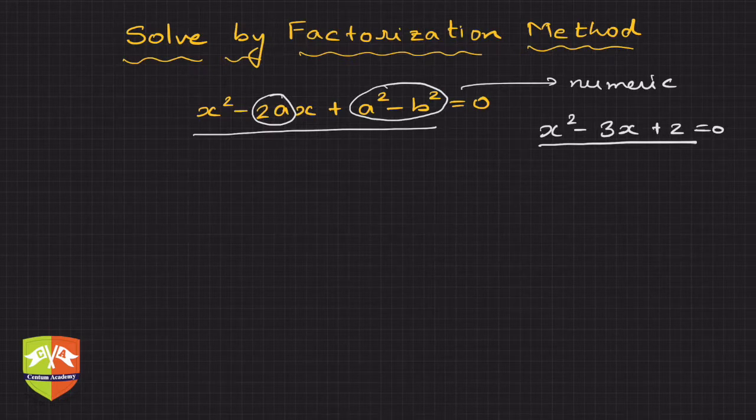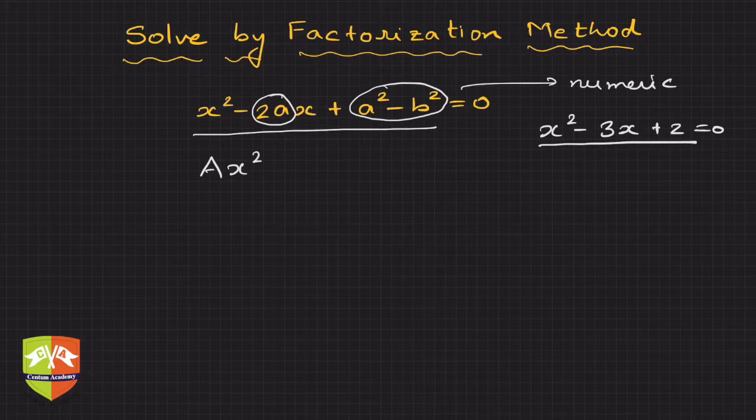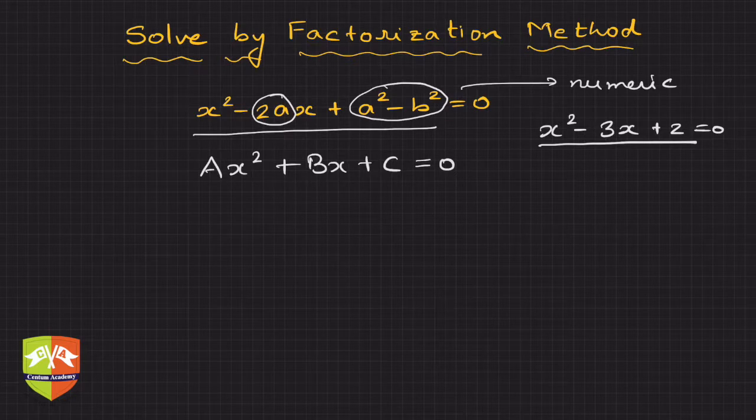We are going to adopt splitting the middle term. So how does splitting the middle term work? Basically you had an equation Ax² + Bx + C = 0. Here I am purposefully using capital A, B, and C to avoid confusion with the a's and b's here.